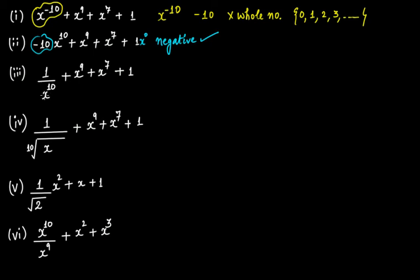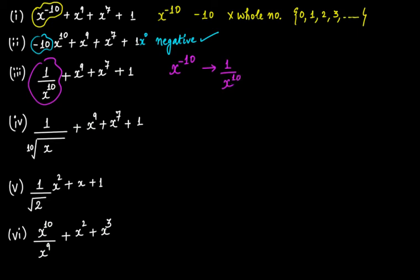This expression is 1 divided by x raised to the power of 10, plus x raised to the power of 9, plus x raised to the power of 7, plus 1. If you pay attention to this term, 1 over x to the power of 10 can be written as x raised to the power of minus 10. It's exactly the same condition as we saw before, so this is not a polynomial.